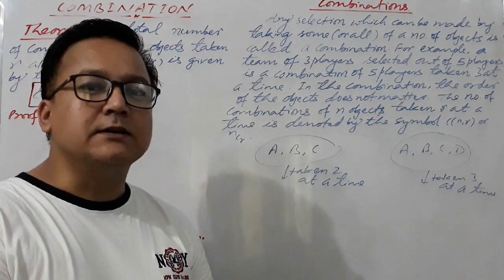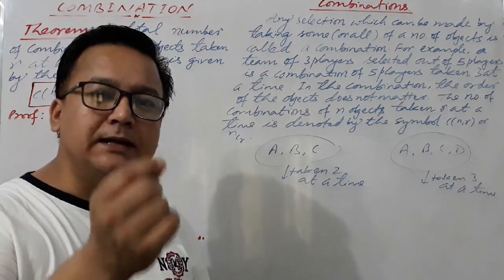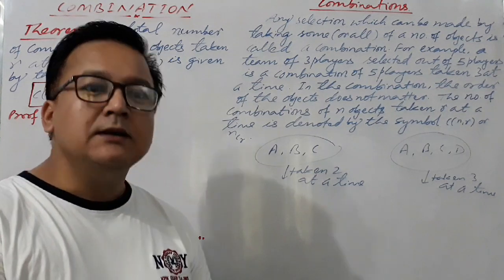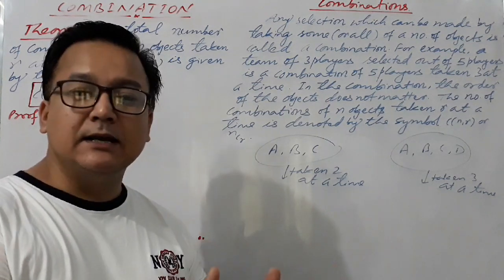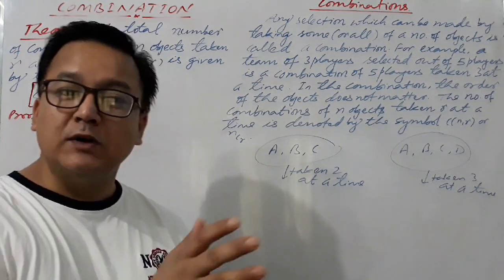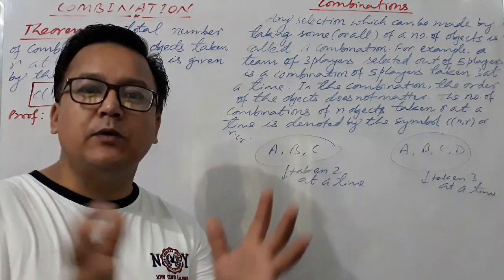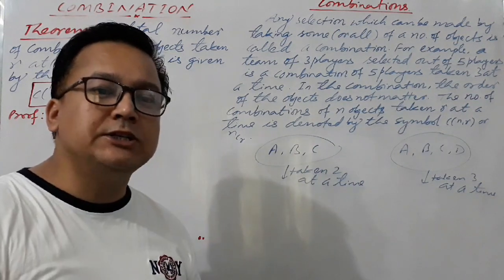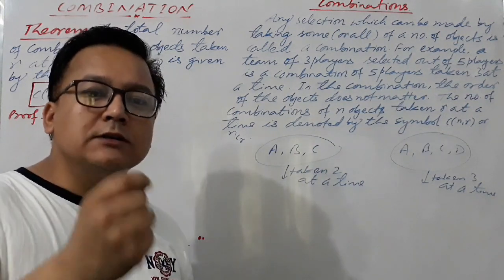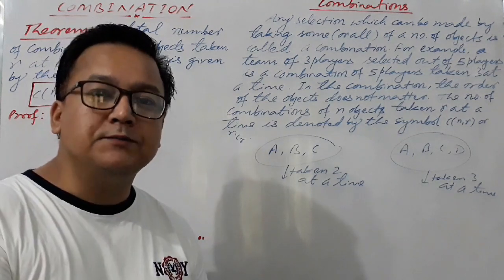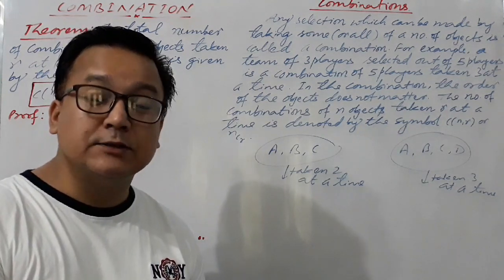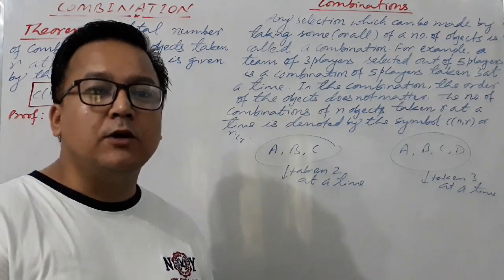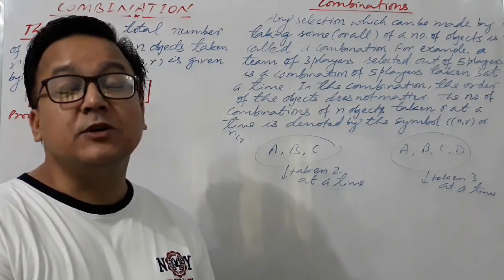Let's understand what combination is. In short, combination is also an arrangement, just like permutation is an arrangement. But what is the difference between permutation and combination? In permutation, the order of the objects matters. But in the case of combination, the order of the objects does not matter.